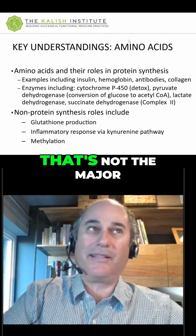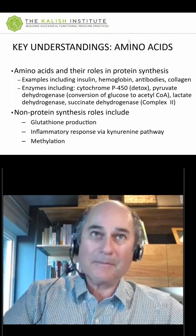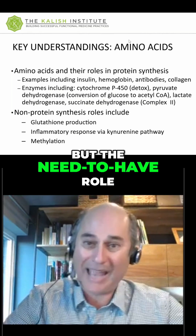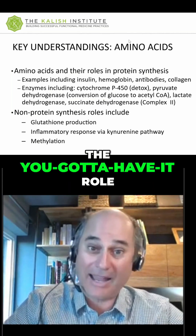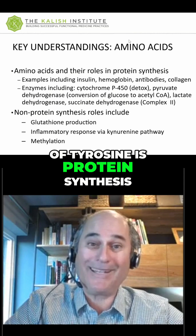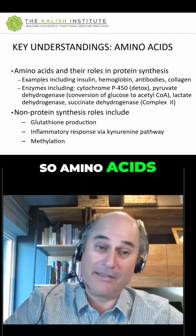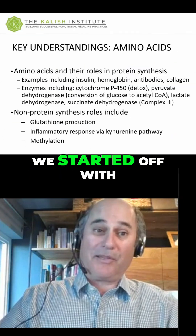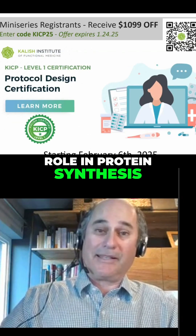That's not the major role of tryptophan. That's not the major role of tyrosine. Those are nice to haves, but the need-to-have role of glutamine, the need-to-have role of tryptophan, the you-got-to-have-it role of tyrosine is protein synthesis. Amino acids — you can't heal without them. This is pretty important stuff. The most important thing we started off with: amino acids and their role in protein synthesis.